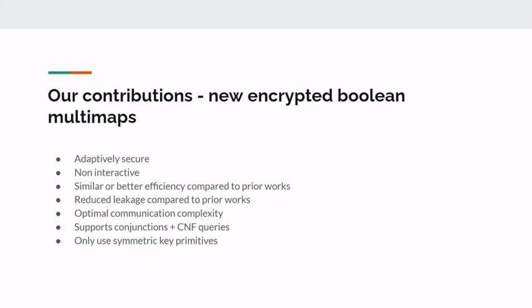In our work, we present new encrypted boolean multi-maps which are adaptively secure, non-interactive, have similar or better efficiency, and have reduced leakage compared to prior works. In particular, we obtain new constructions for handling conjunctions and CNF queries with reduced leakage and optimal communication complexity. Furthermore, our scheme only uses symmetric-key primitives and ends up being more practical than prior works.